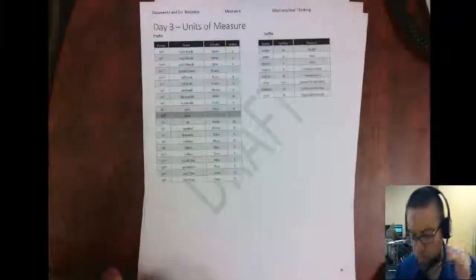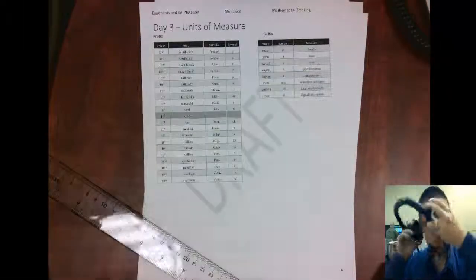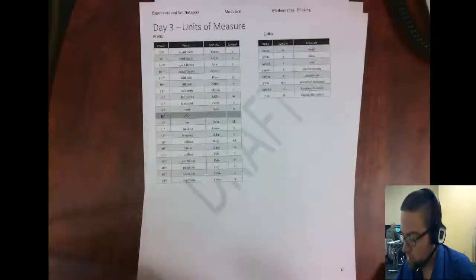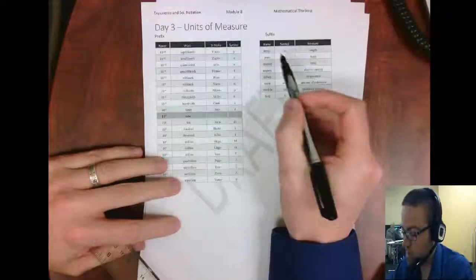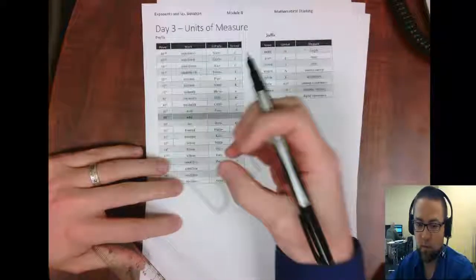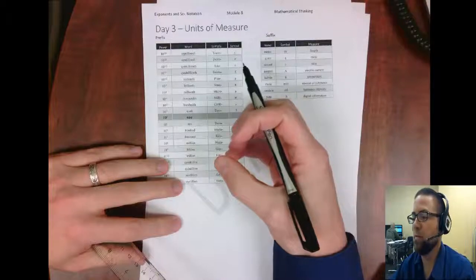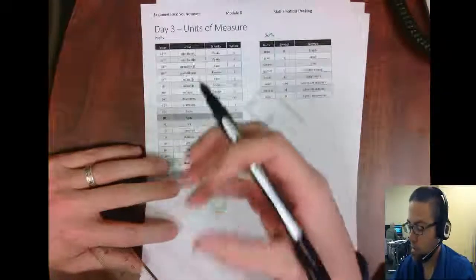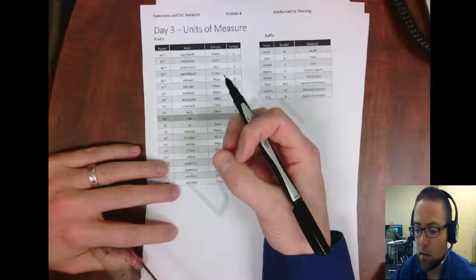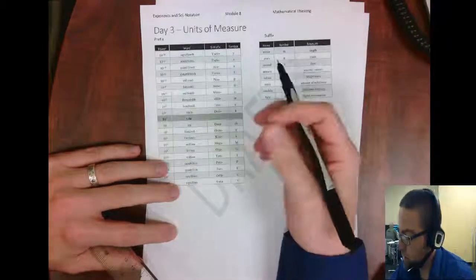Hello everybody, we're going to talk about units of measure now. In the units of measure, what a unit is, is just like some quantity of things. So if you said, I have 10 apples, the apples is, a single apple is the unit of measure in that quantity.